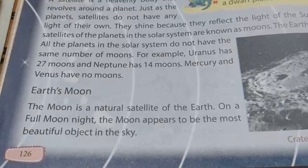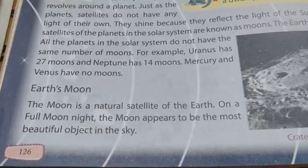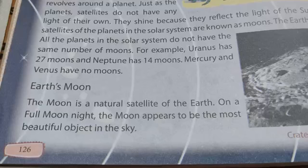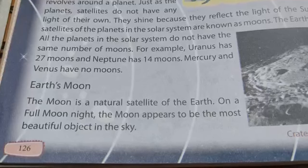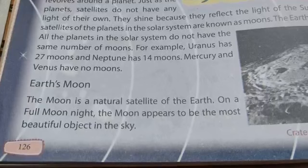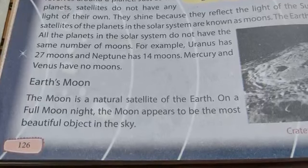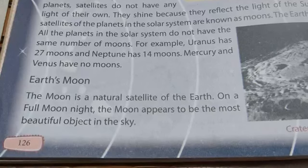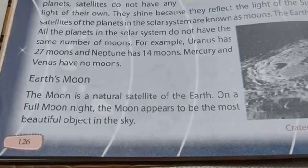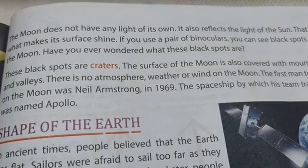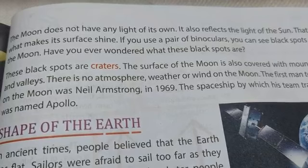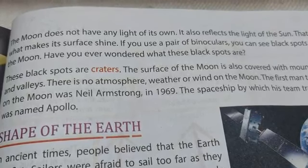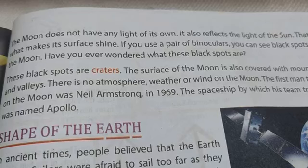The moon is a natural satellite of the Earth. On a full moon night, the moon appears to be the most beautiful object in the sky. The moon also does not have light of its own — it reflects the light of the sun, which makes its surface shine.